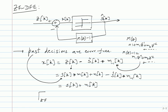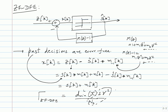The figure of merit for ZF-DFE becomes d²_min(x) divided by (N₀/2γ²), giving 2γ²/N₀. The probability of error Q(√(γ/2)) is a reasonably accurate measure for instances where past decisions are error free. When past decisions have errors, this measure doesn't hold.